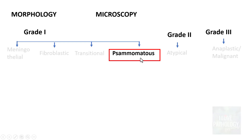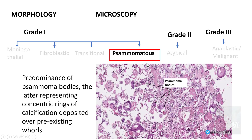The next variant is psammomatous meningioma, where you find numerous psammoma bodies. These are deposits of dystrophic calcification representing concentric rings of calcification deposited over pre-existing whorls, as seen in the transitional type. When the tumour cells in these whorls die, they undergo dystrophic calcification in the form of concentric rings — these are the psammoma bodies.